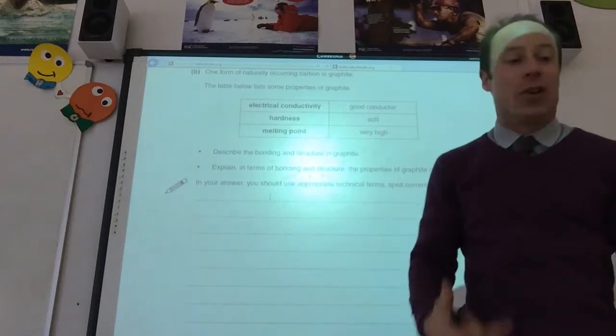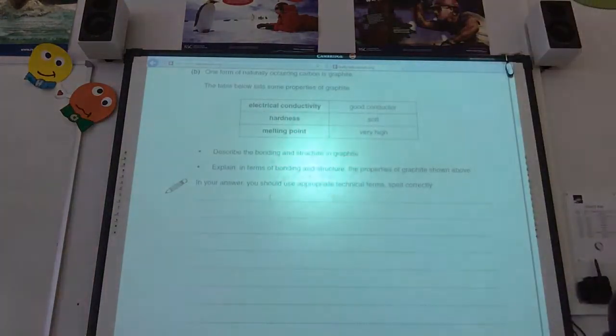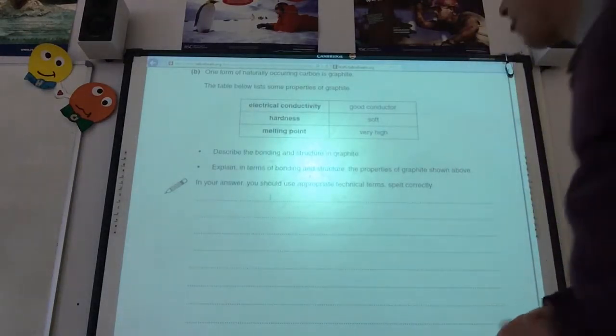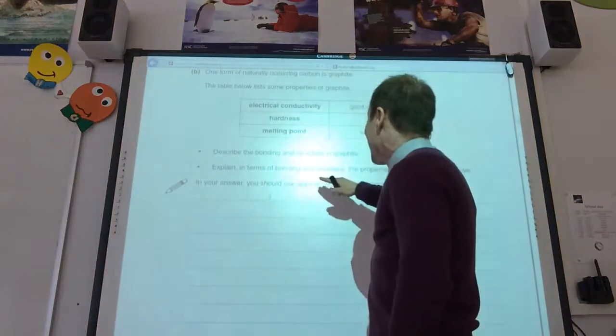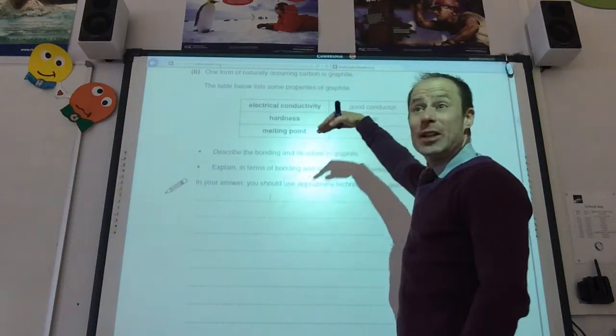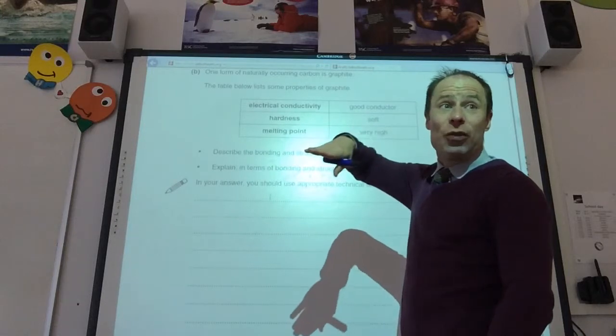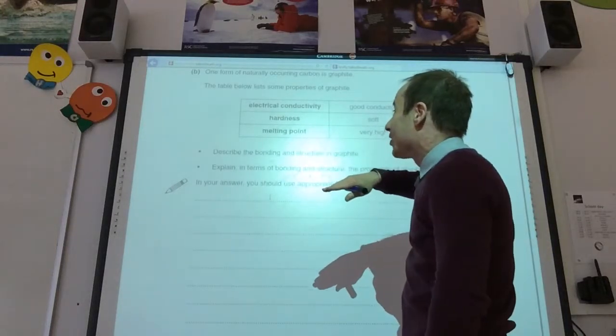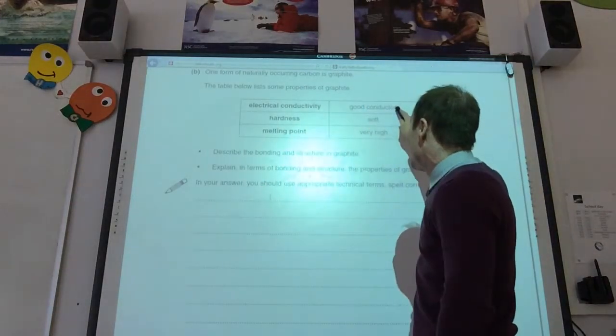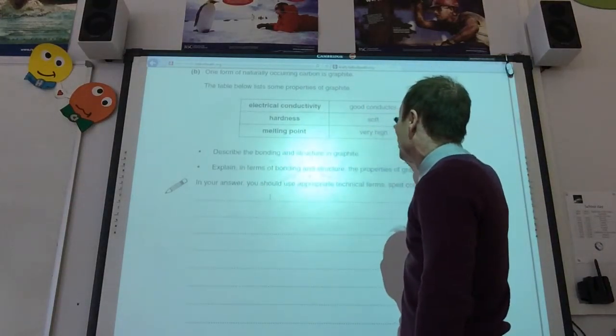So, for one mark, you've got a giant covalent structure. The next thing is it wants to explain each of those properties below. Well, okay, let's have a look. So, electrical is a good conductor. That's because I've got mobile electrons between the layers. So, those electrons can move. So, that's our conductivity.